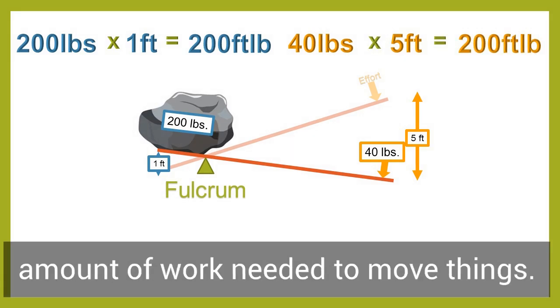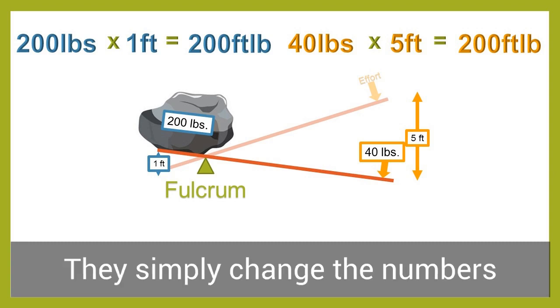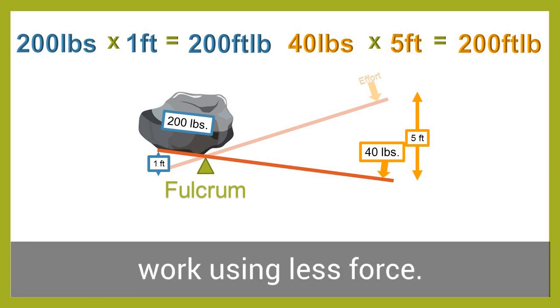Simple machines don't change the amount of work needed to move things. They simply change the numbers around a bit so we can do the same work using less force.